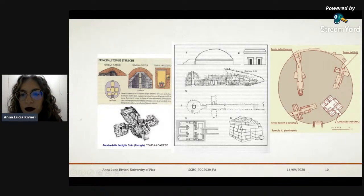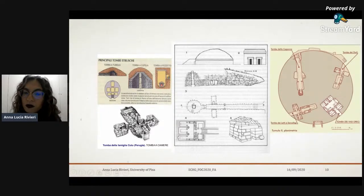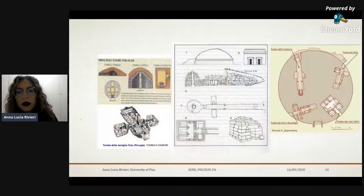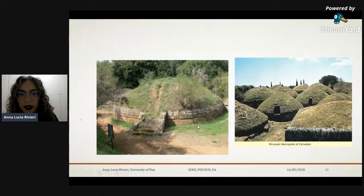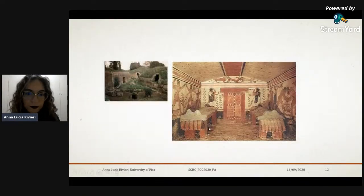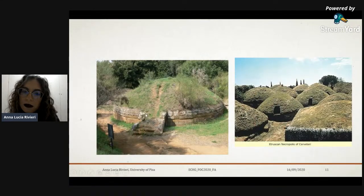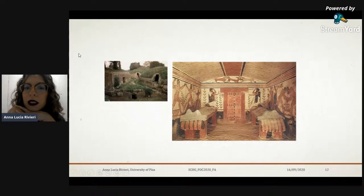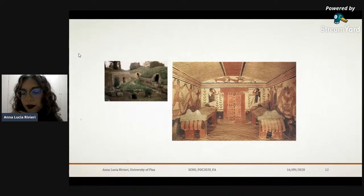There is also the record of a house tomb, which was made or excavated directly into the rocks and hills, or it was built up with stone bricks. The most famous and richest necropolises of the Etruscan society were those of Tarquinia and Cerveteri.